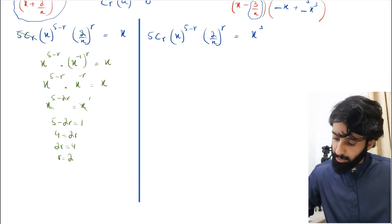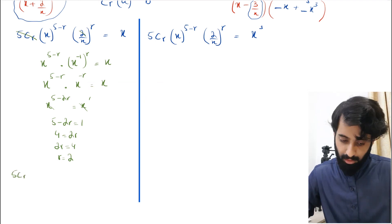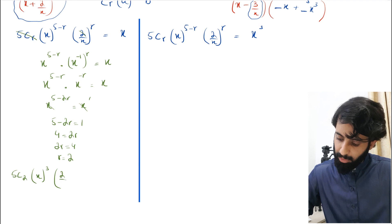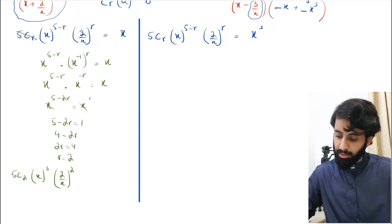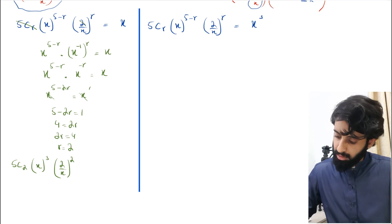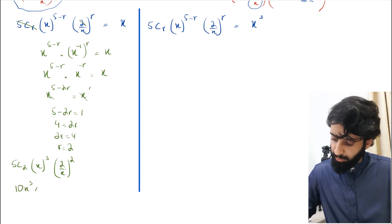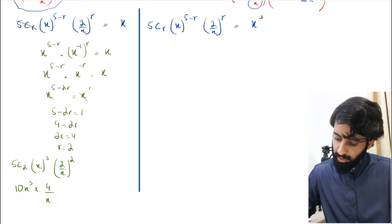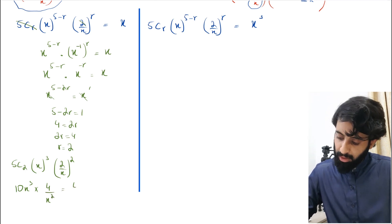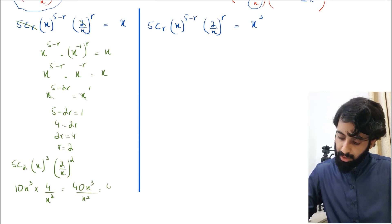Plugging in r = 2: 5C2 · x^(5−2) · (2/x)^2 = 5C2 · x³ · (4/x²). 5C2 = 10, so this becomes 10x³ · (4/x²) = 40x³/x² = 40x. So the term in x from the expansion is 40x.